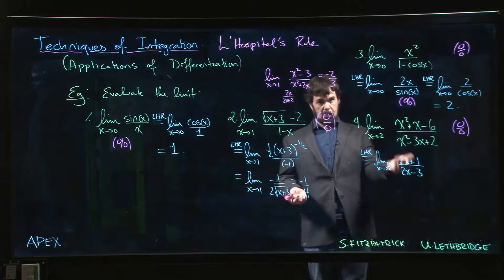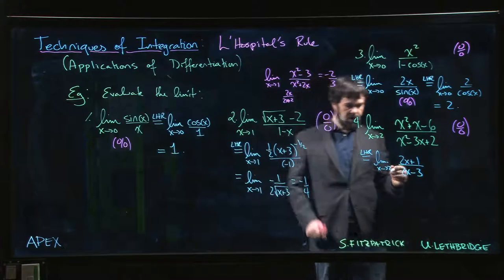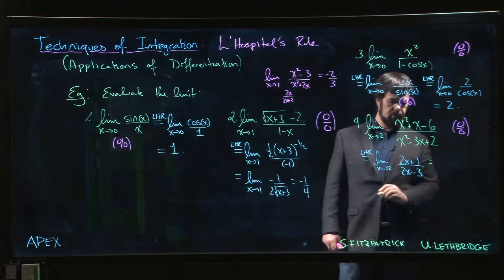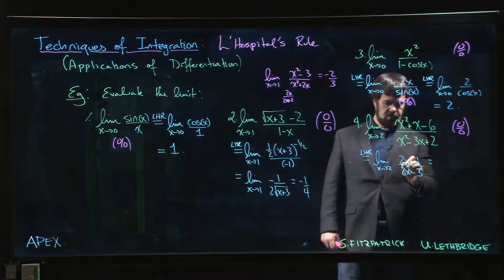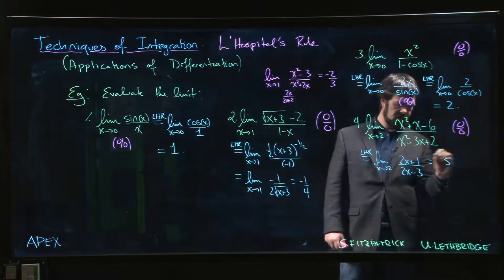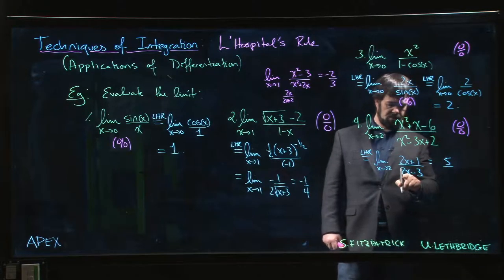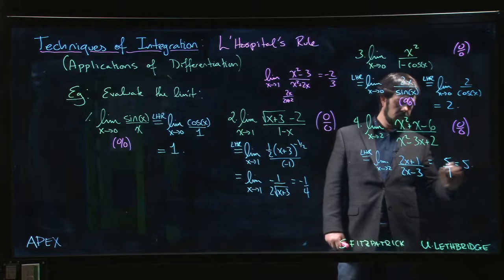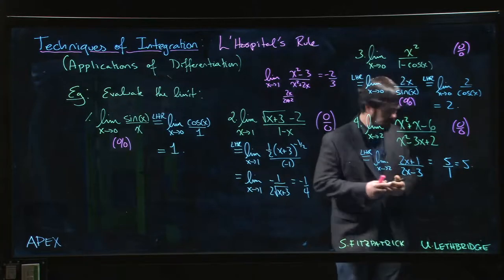This is not a 0 over 0 limit anymore, so we don't get to use L'Hopital's rule again. All we can do at this point is plug things in. So 2 times 2 plus 1 is 5. 2 times 2 is 4 minus 3 is 1. 5 over 1. We get a limit of 5. Okay.